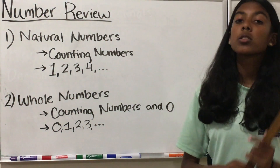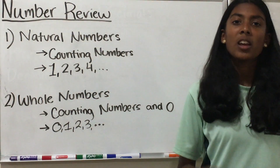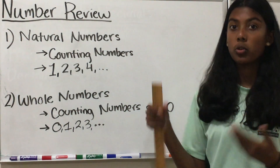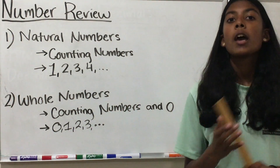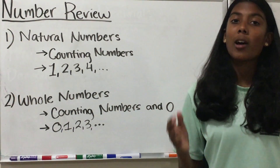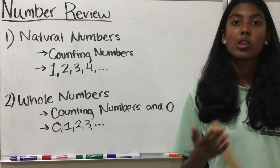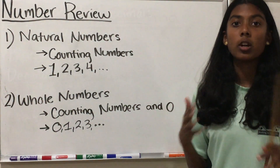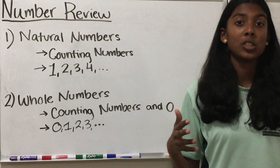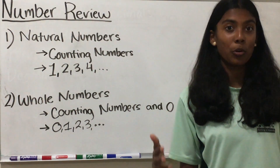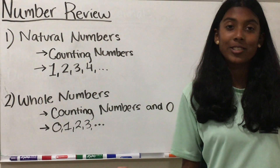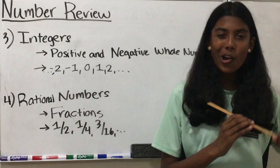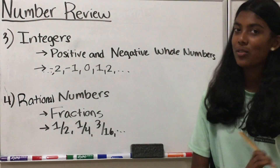Our next type of numbers are the whole numbers. These are basically the natural numbers or the counting numbers, except we also have zero. So our whole numbers are 0, 1, 2, 3, 4, and so on until infinity.